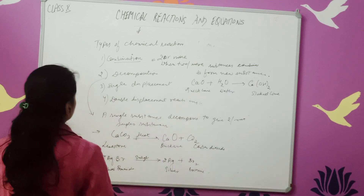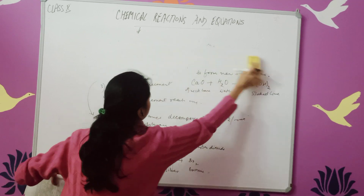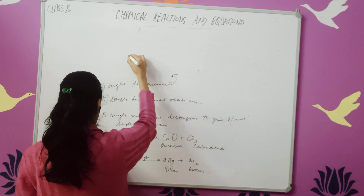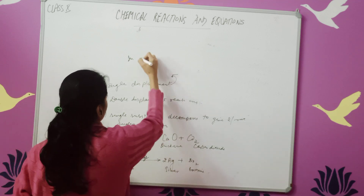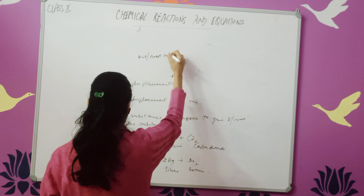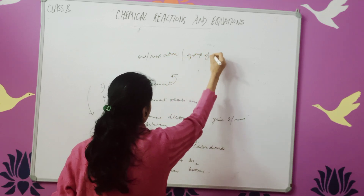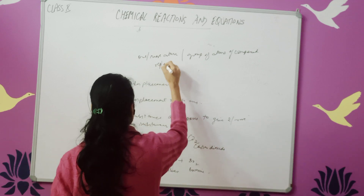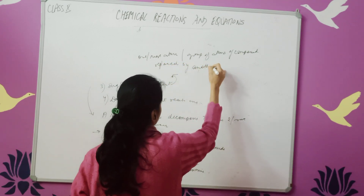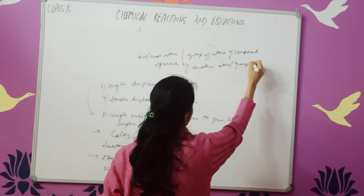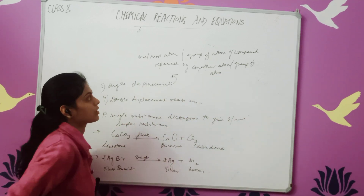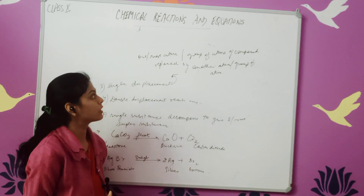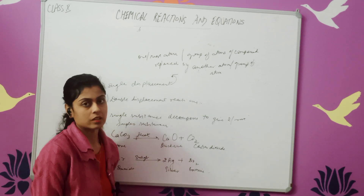Now third is the single displacement reaction. What happens in a single displacement reaction? When one or more atoms or a group of atoms is replaced by another atom or group of atoms in a compound, it is called a single displacement reaction.